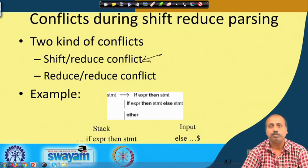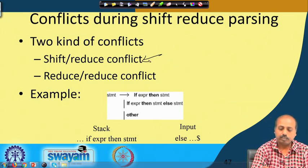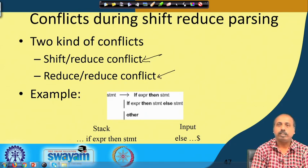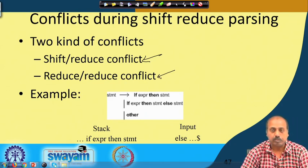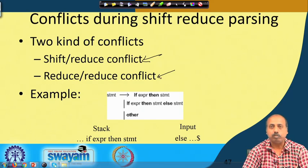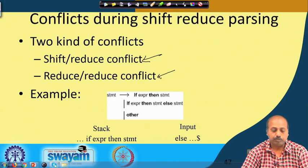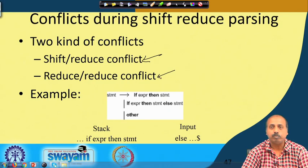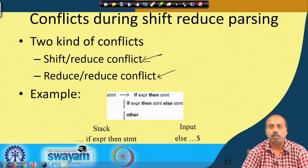There is another conflict known as a reduce-reduce conflict, where there are more than one rule by which we may do the reduction. In future, as you see more tokens, maybe one of these reductions is valid. If you do not do enough lookahead, there will be conflicts that cannot be resolved at the first level itself, giving us a reduce-reduce conflict.